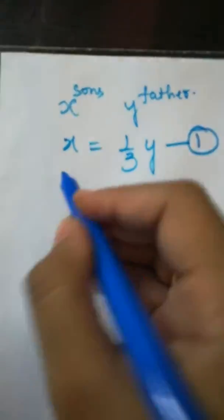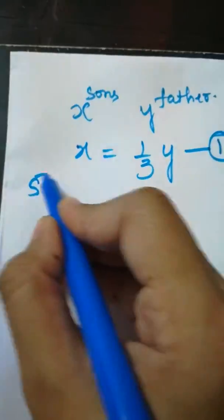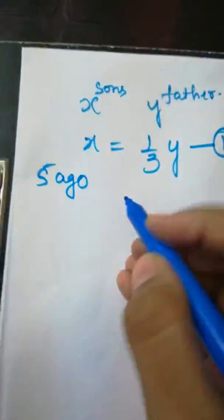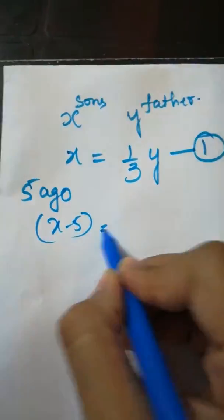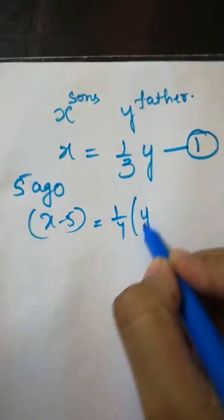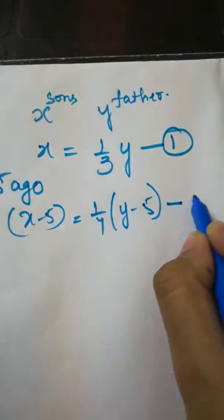Let this be equation 1. And later, five years ago they are quarter. So X minus 5 is equals to one fourth of Y minus 5. This is equation number 2.